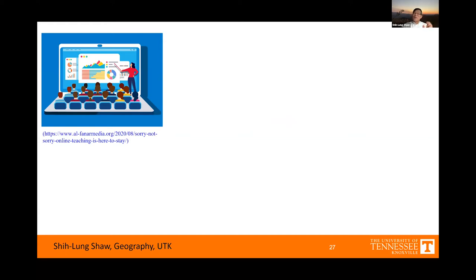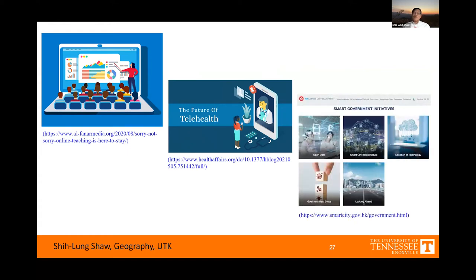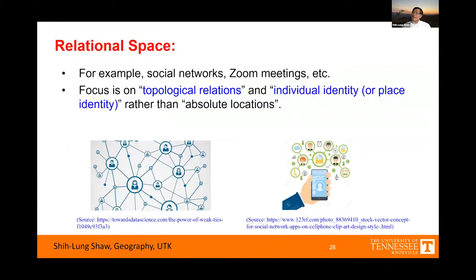Next: relational space. Under COVID-19, a lot of our activities are moving online and becoming more relational — for example, online teaching, and even telemedicine is becoming more popular in Hong Kong. The Hong Kong government has proposed a Smart City Blueprint 2.0, and many of these initiatives are actually based on the concepts of relational space. Social networks and this Zoom meeting are all examples of relational space.